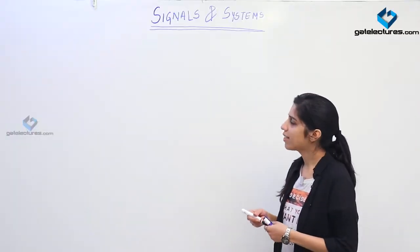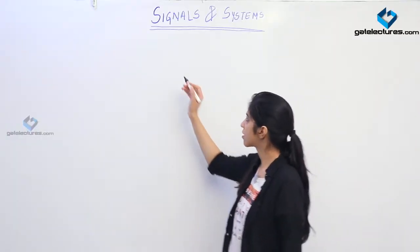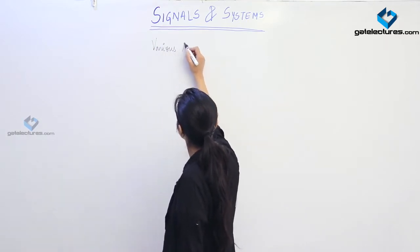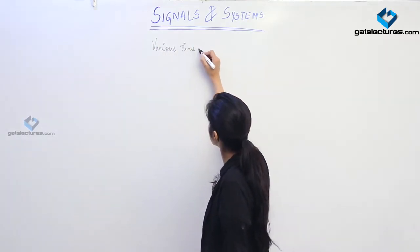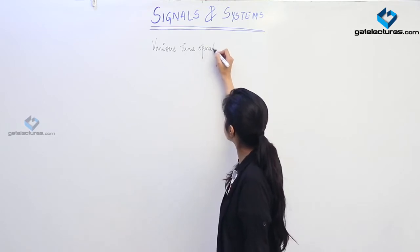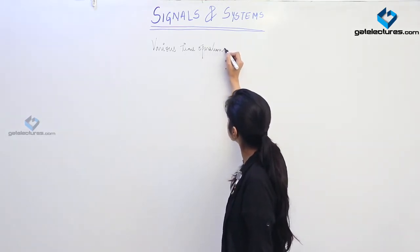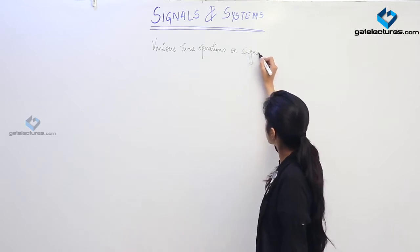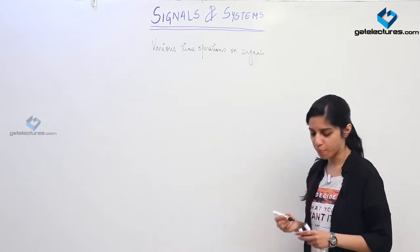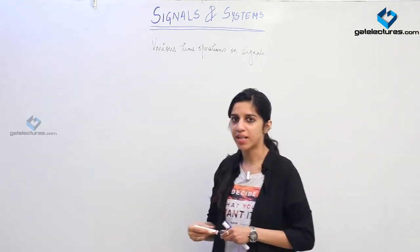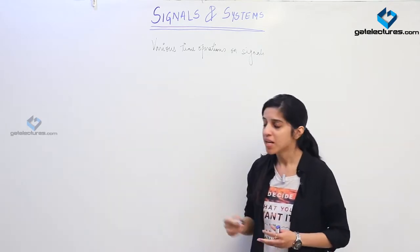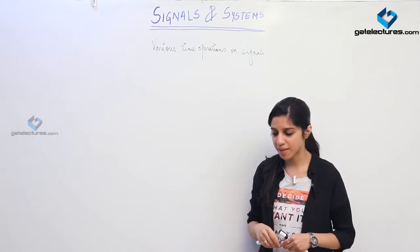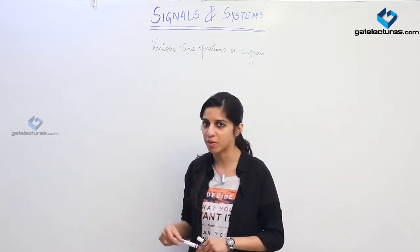So today we are going to look at some basic operations on signals — various time operations on signals. Basically we are performing some operations with the argument of a signal, with the time domain of the signal. The various possible operations that we are going to look at are time shifting, time scaling and time reversal.